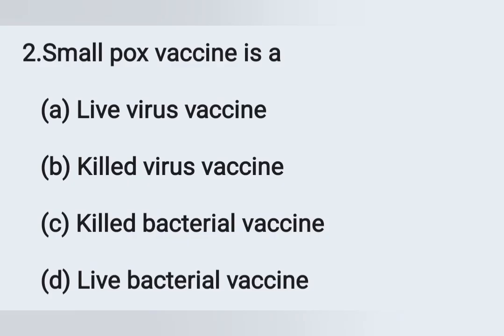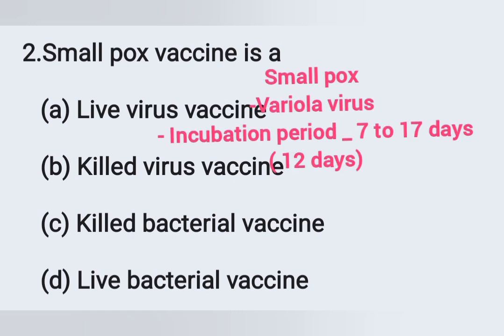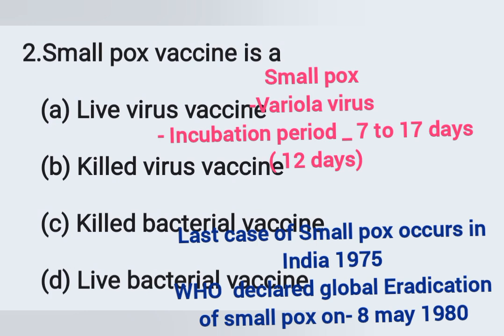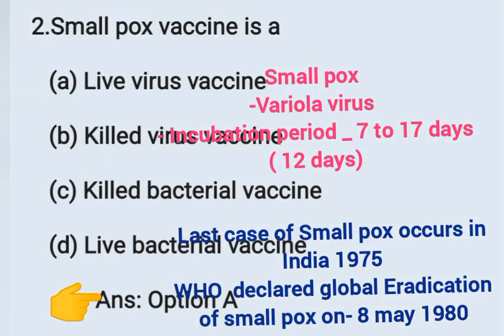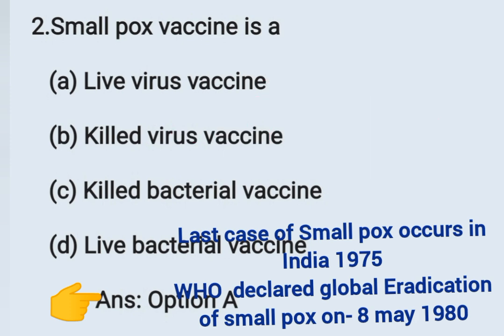Next question: Smallpox vaccine is — Option A: live virus vaccine, Option B: killed virus vaccine, Option C: killed bacterial vaccine, Option D: live bacterial vaccine. Smallpox is caused by the Variola virus with an incubation period of 7 to 17 days, usually about 12 days. The correct answer is live virus vaccine. Also important: the last case of smallpox in India was in 1975, and WHO declared global eradication of smallpox on 8th May 1980.